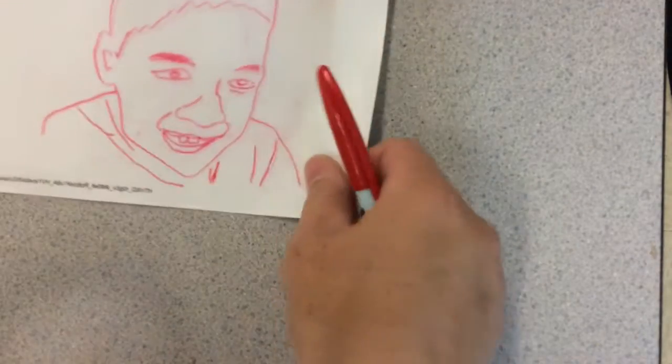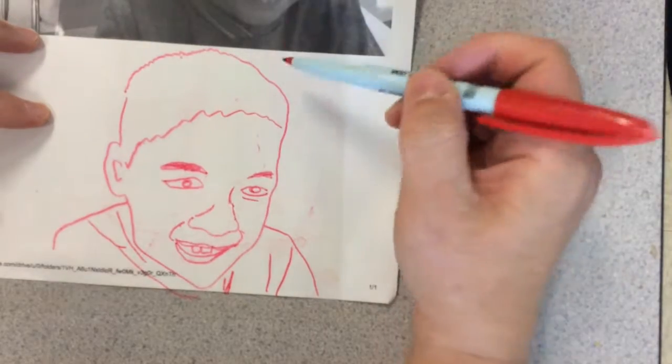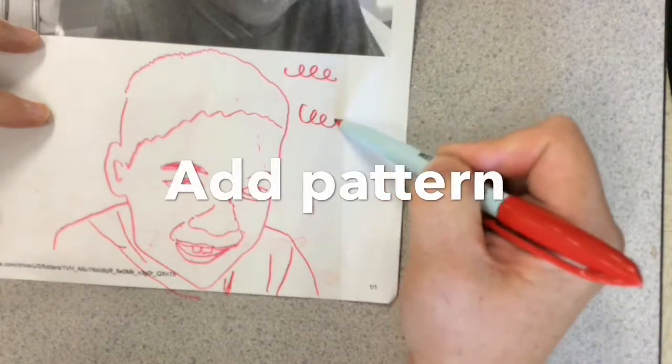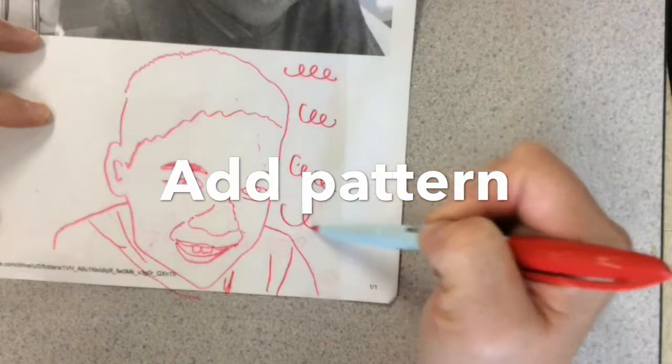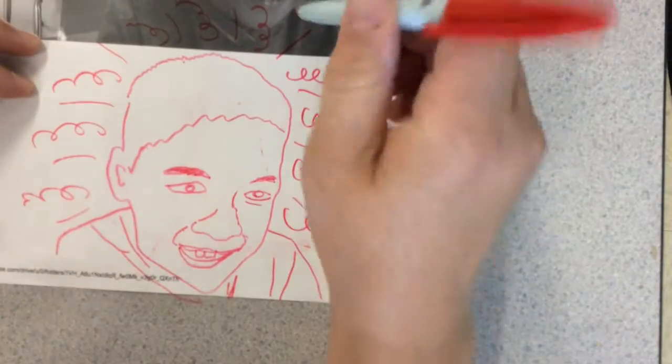Now when you're done with that, if you want, you can slide it down to the white part to see what it looks like. Looks pretty good. And then you can do a design. I can do spiral lines. Whatever you do, choose something and repeat it all the way around.